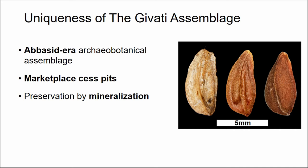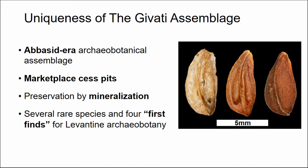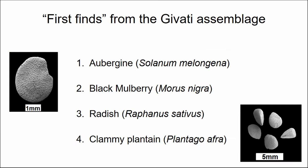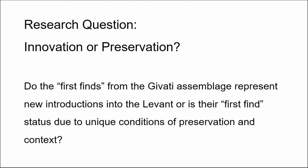The site has wholesale preservation by mineralization of archeobotanical remains, which is unprecedented. In the picture, the left shows the archeobotanical remains and the right shows modern apple seeds — you can see the quality of preservation. Owing to these unique circumstances of context and preservation, several rare species were found including four first finds for Levantine archeobotany: the aubergine, black mulberry, radish, and the wild species clammy plantain.